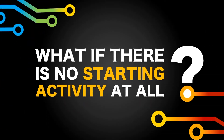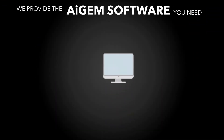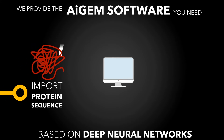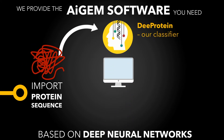What you must know is that for protein improvement by directed evolution, you need at least a low starting activity. But what if there is no starting activity at all? To solve this problem, we created AIGEM, our software package for evolution-mimicking based on deep neural networks. All you need to do is import your protein sequence. In the first step, use our classifier called DeepProtein to find out whether your protein contains some starting activity or even unknown sleeping features that could be activated by directed evolution.